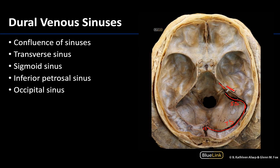Another difficult to identify dural venous sinus is the occipital sinus. You can see a bit of the falx cerebelli right here — this little structure right here — which would have run in between the cerebellar hemispheres if the brain was present. That is where the occipital sinus will be located. Not particularly easy to see in a dissection, but that is where it would be. Like the superior sagittal sinus and the straight sinus, it will drain into the confluence of sinuses.